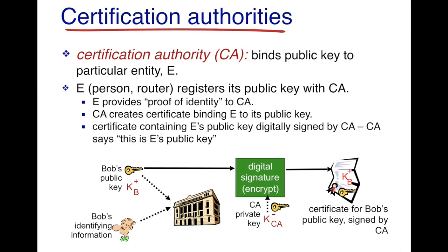This is where the certification authority, or CA, comes in. A certification authority is an entity or organization — it could be the government — which we trust. It's a large organization where collectively individuals place their trust. What the CA does is it binds a public key to a particular entity E.